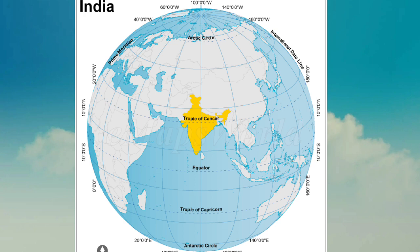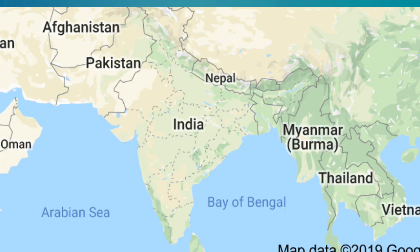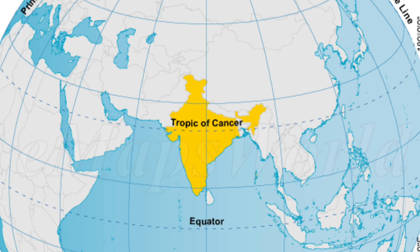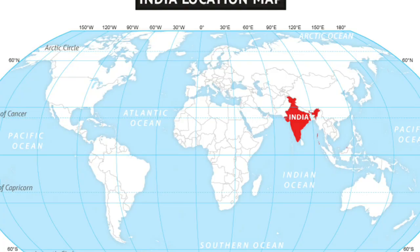The total length of the land frontier is 15,200 kilometers. India is bordered by Pakistan and Afghanistan to the northwest, China, Nepal and Bhutan to the north, and Bangladesh and Myanmar to the east. India has 28 states and nine union territories. The countries larger than India are Russia, Canada, China, USA, Brazil and Australia.